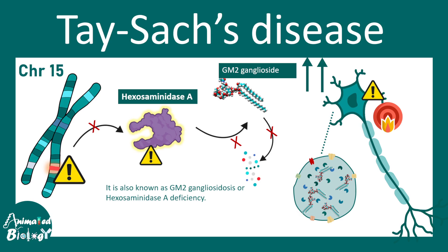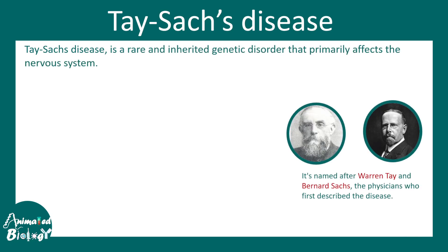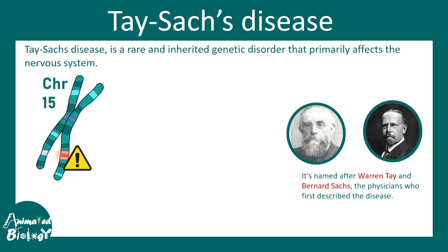In this video we'll be talking about Tay-Sachs disease, which is a lysosomal storage disorder. Tay-Sachs disease is a rare inherited genetic disorder that primarily affects the nervous system. It was reported by Warren Tay and Bernard Sachs, and based on their names it is known as Tay-Sachs disease.